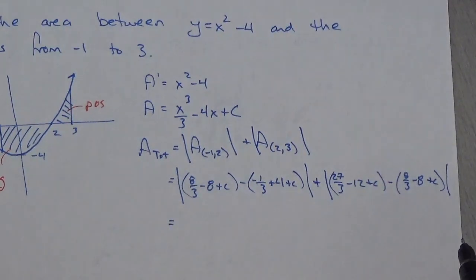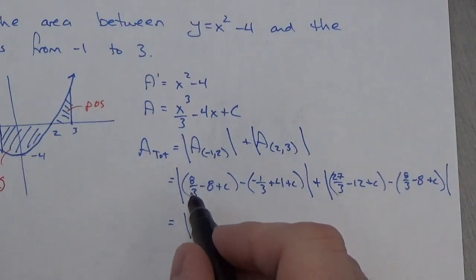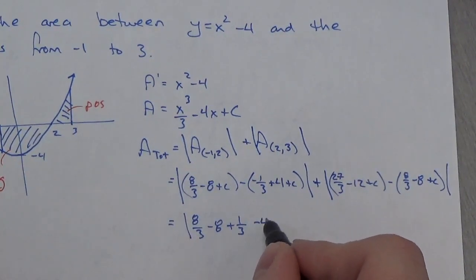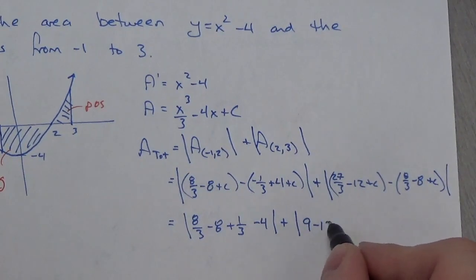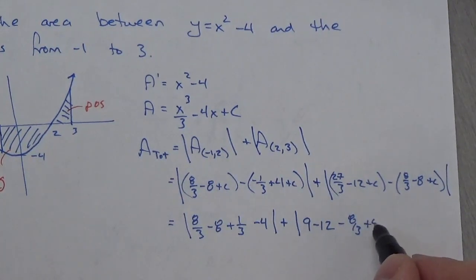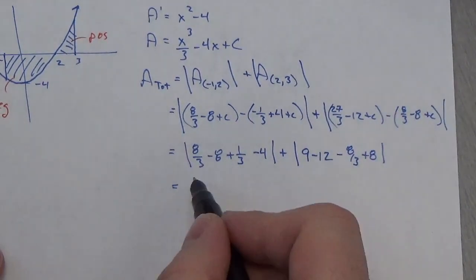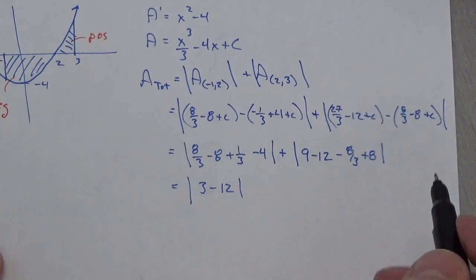Okay, and now, putting these pieces together here, what have we got here? Well, this is going to be the absolute value of 8 thirds minus 8, the c's are going to cancel, plus 1 third minus 4, and then over here, well, 27 thirds is 9, minus 12, minus 8 thirds plus 8. Okay, so let's keep going here, 8 thirds, 8 thirds plus 1 third is going to be 9 thirds, which is just 3, minus, 8 minus 4 is going to be negative 12,